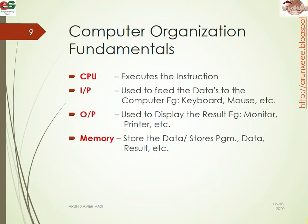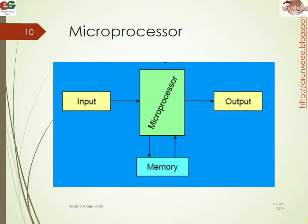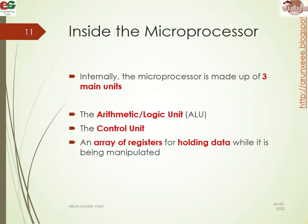The CPU executes the instructions; input devices means keyboard, mouse, etc., and output devices display the result — monitor, printer, etc. — then memory is used to store the data. The microprocessor also has input sections, output sections, and memory. Inside the microprocessor it basically consists of three main units: the mathematical and logical unit (ALU), control unit, and an array of registers for holding data while it is being manipulated.